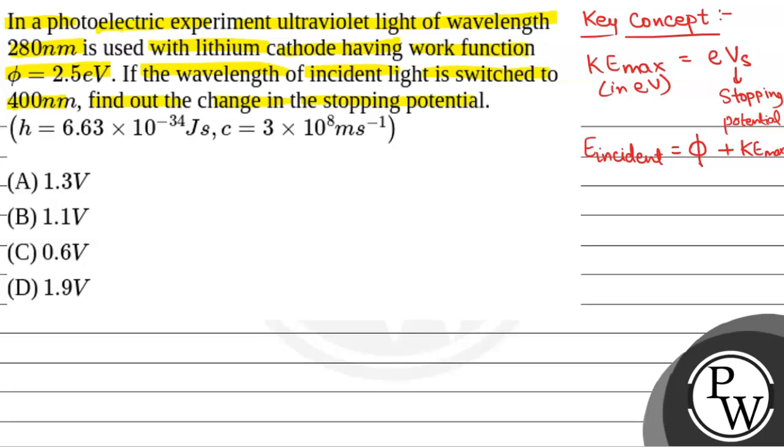Now, we will see in the first case, we have energy incident that will be equal to 1240 by lambda in nanometers, that is 280. So, that will be equal to 4.43 electron volts.